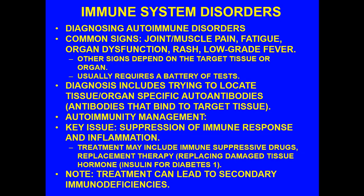When we diagnose immune disorders, there are some common signs and some that are unique for the target tissue or organ. Common signs include joint and muscle pain, fatigue, organ dysfunction, rash, and low-grade fever. Other signs depend on the target tissue — whether skin, kidney, lungs, or digestive system. It usually requires a battery of tests, because no one test gives an absolute positive or negative. Several tests must be combined to make an assessment and diagnosis.